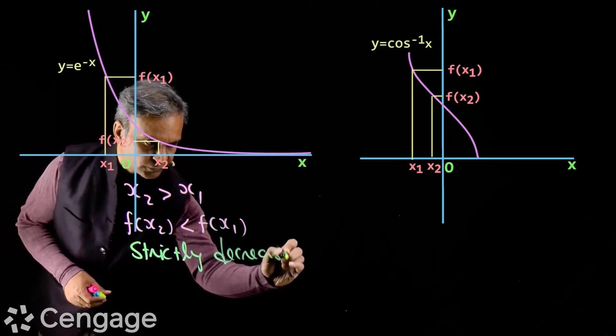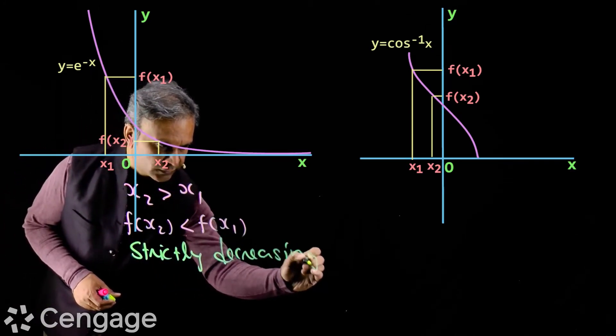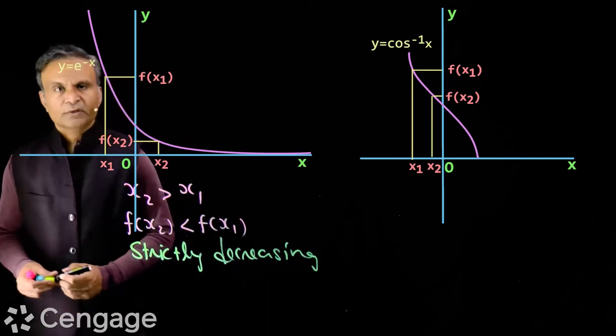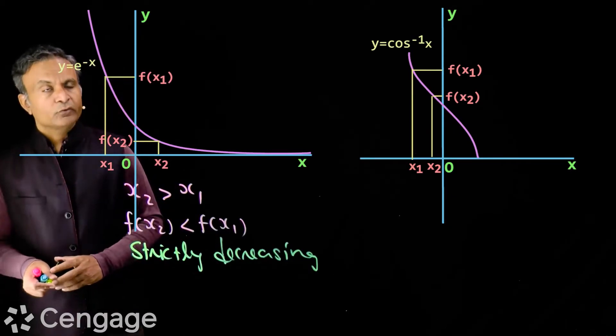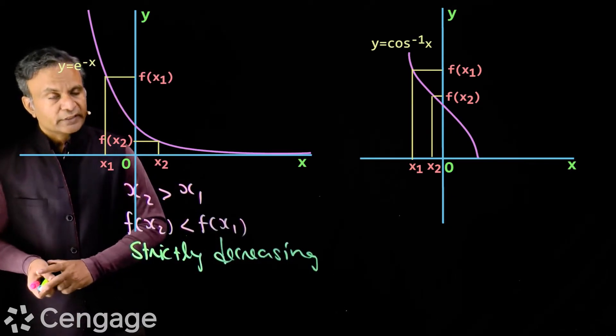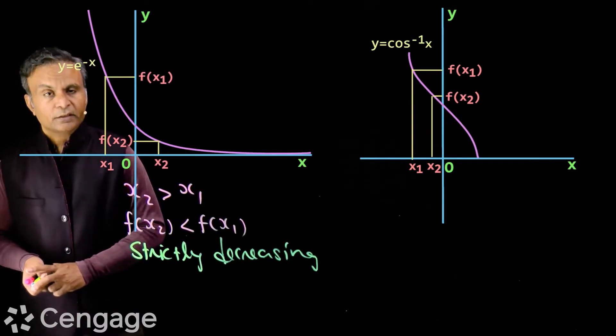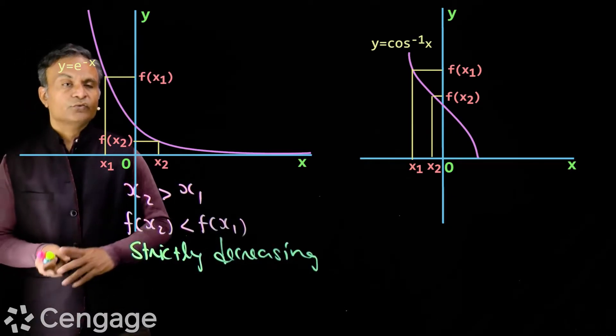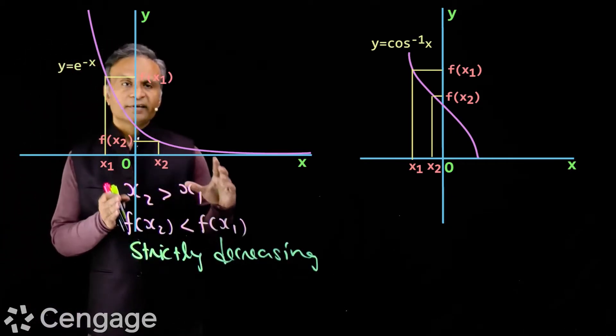Strictly decreasing function: the function value decreases with increase in value of x, without repeating.